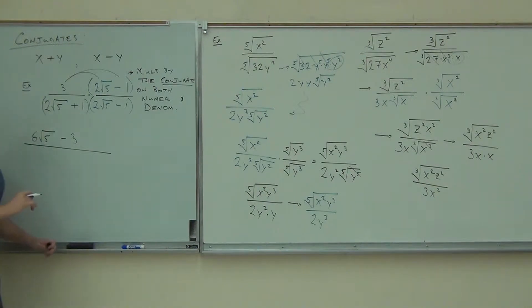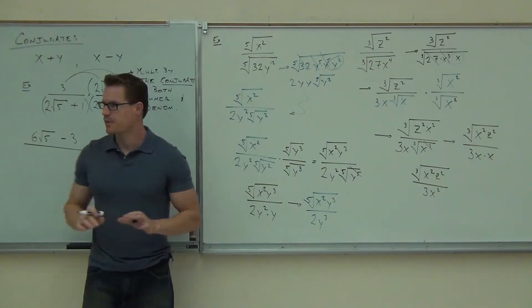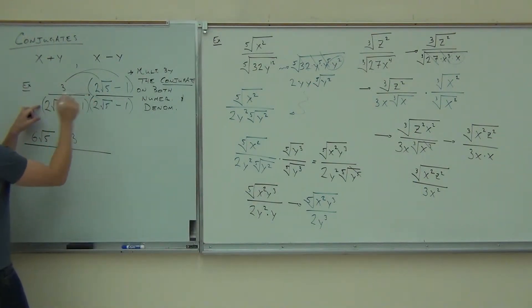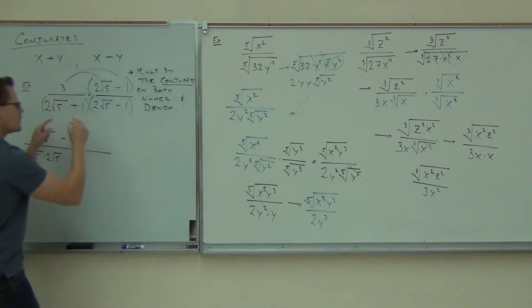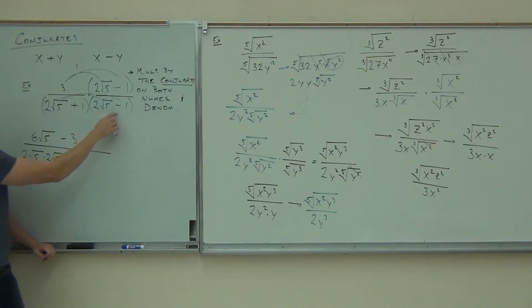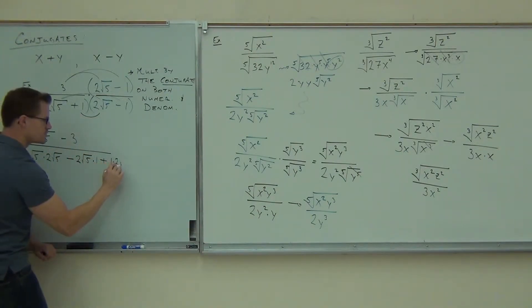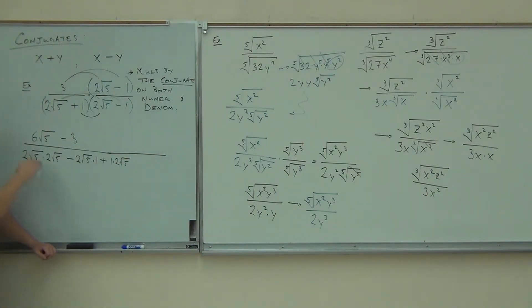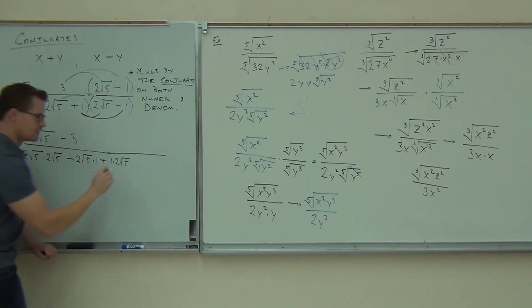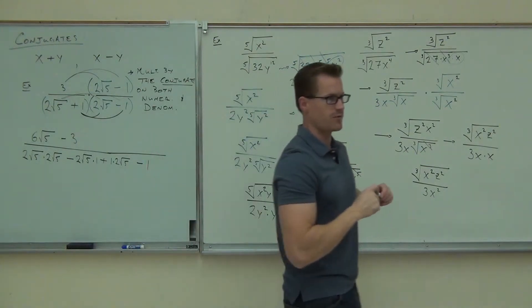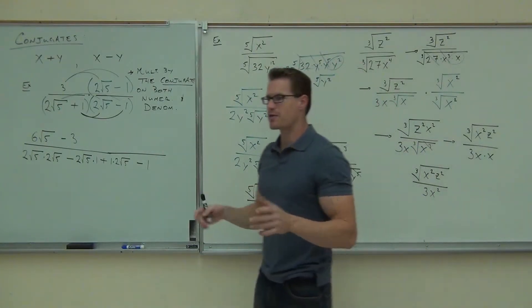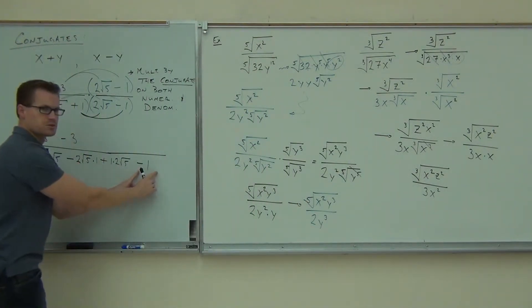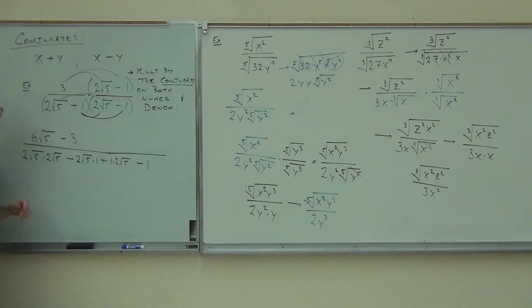The denominator takes a little bit more work. You are still going to FOIL. We're going to write out everything when we FOIL this — this is the trickier part. When we FOIL, we get 2 root 5 times 2 root 5, then minus 2 root 5 times 1, then plus 1 times 2 root 5, and then lastly one more term. We should have 4 terms because we're multiplying 2 terms times 2 terms. Now is the part where we get to simplify.